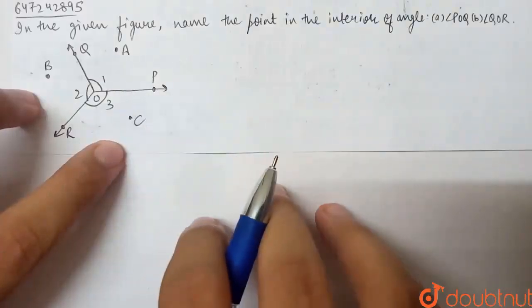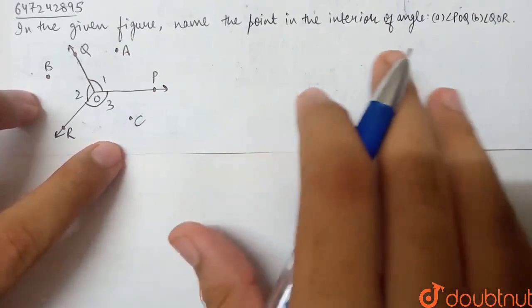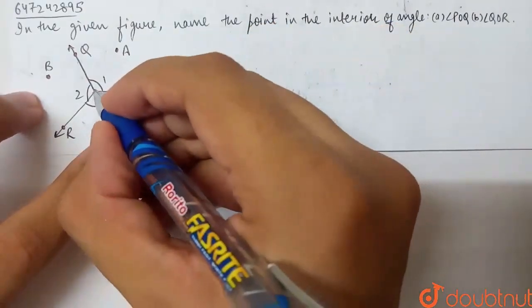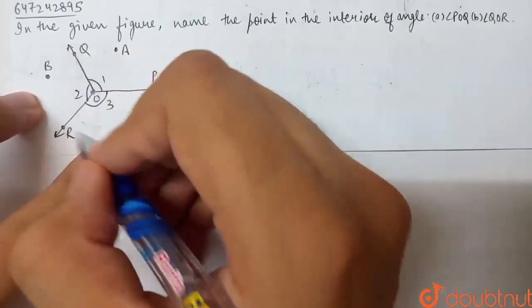This question says, in the given figure, name the point in the interior of angle POQ and QOR. So, this is a point given, and we have three rays left.